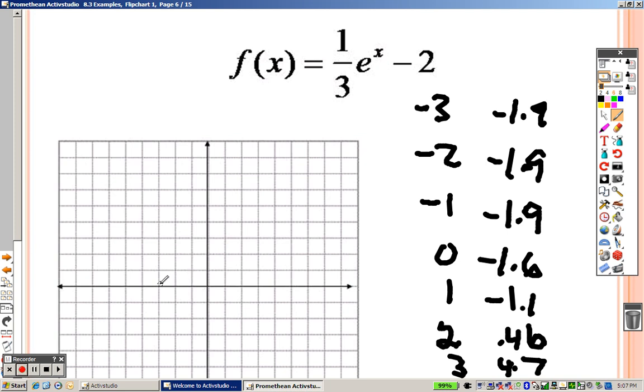We get negative 3 and almost down to negative 2. Almost down to negative 2. Almost down to negative 2. Up a little higher. Up a little higher. Up a little high.